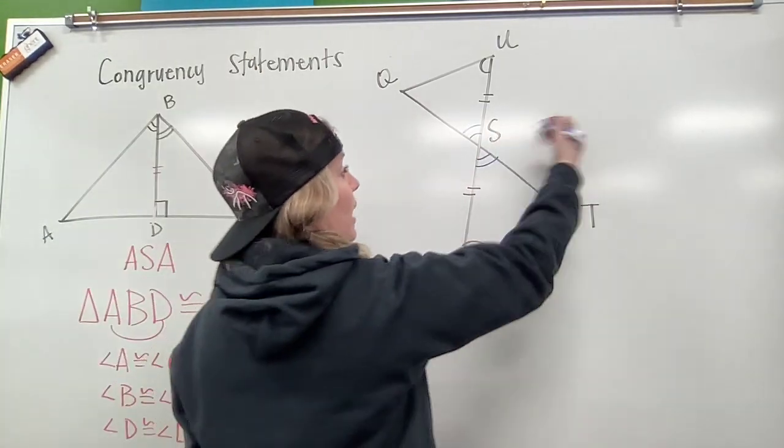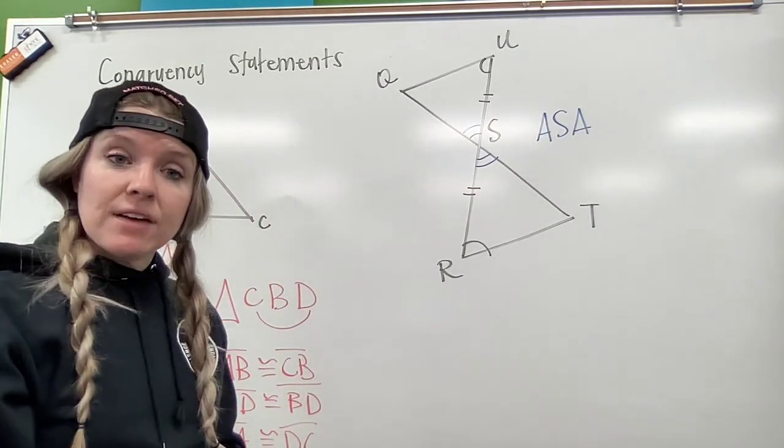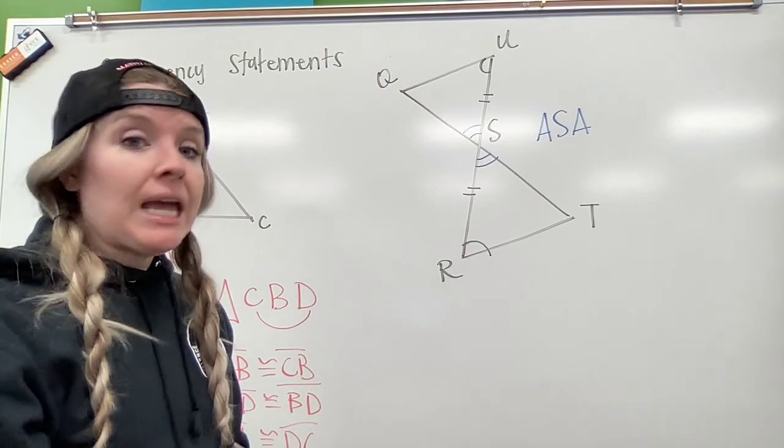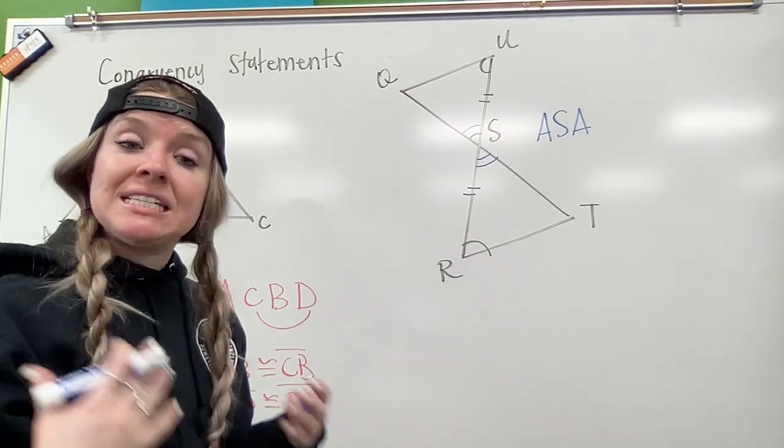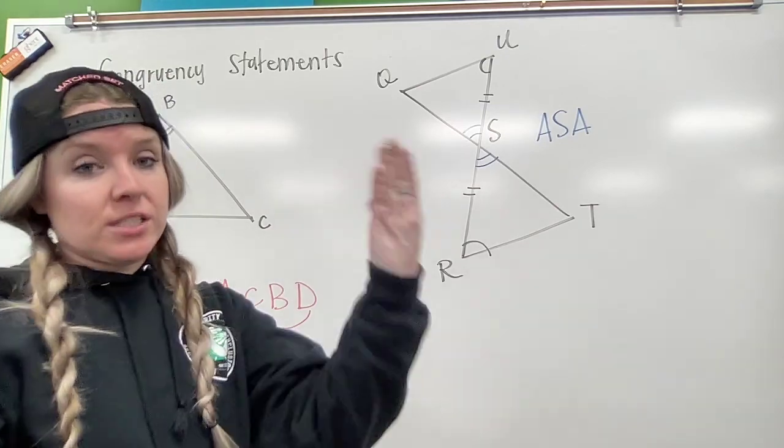So these triangles are congruent by angle, side, angle. And now I just have to write our congruency statement. Our congruency statements might be different, but as long as your order matches from your first to your second triangle, you're accurate.